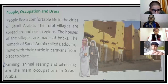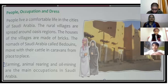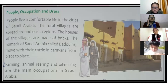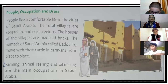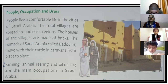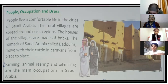The occupations and lifestyle of Saudi Arabia's people: people in cities live a comfortable and modern life. The original nomadic people of Saudi Arabia were called Bedouins. Rural villages are spread around the oasis region — where surface water is found on the soil. Village houses are made of bricks.